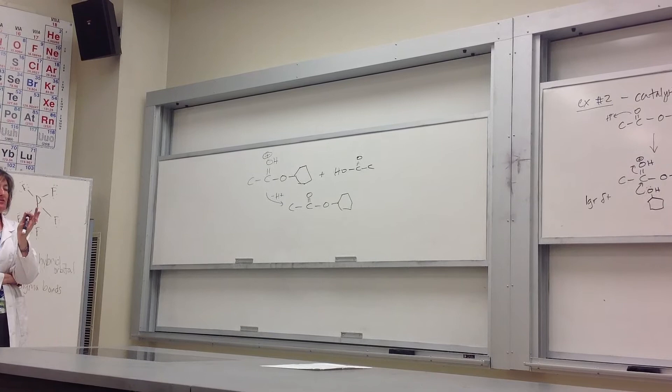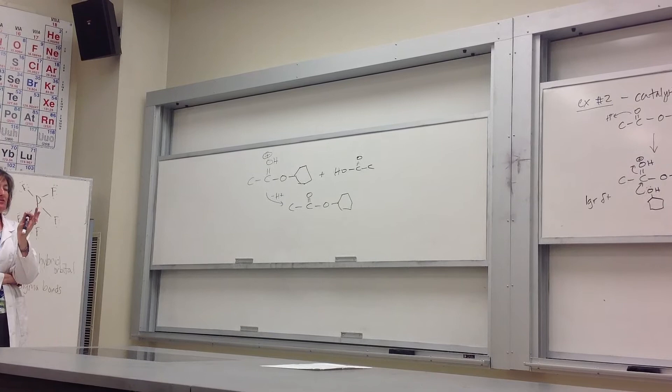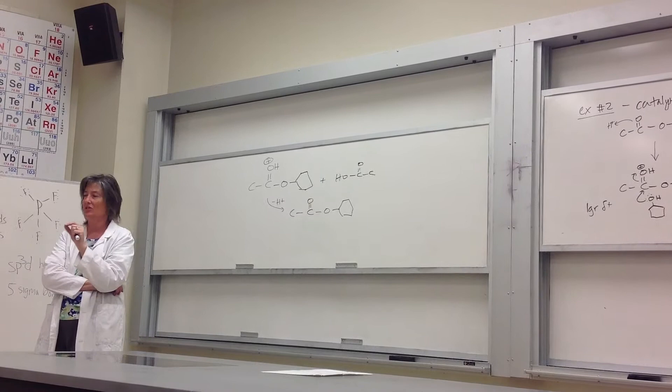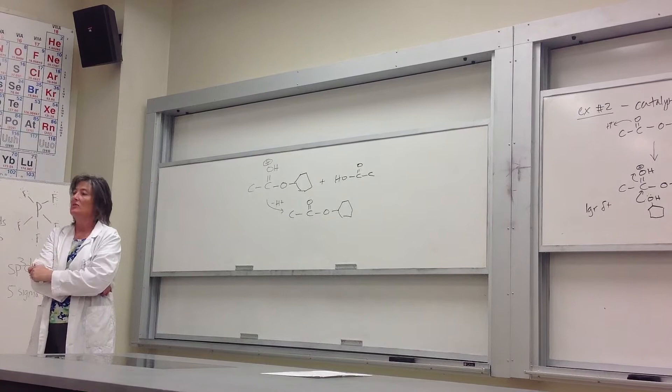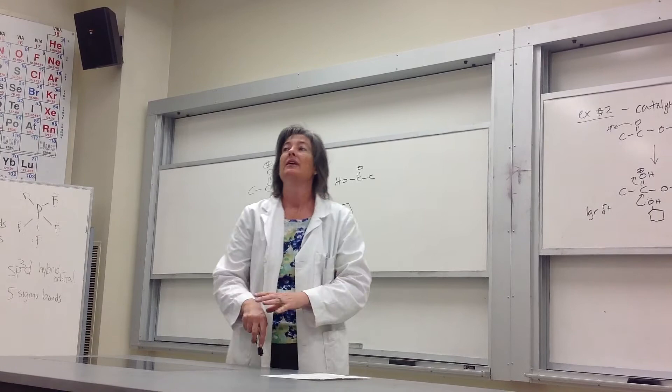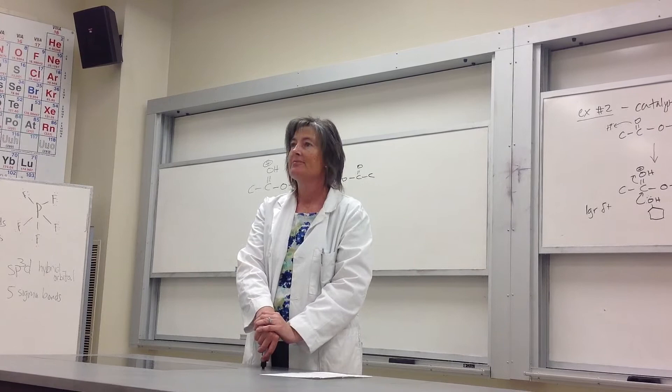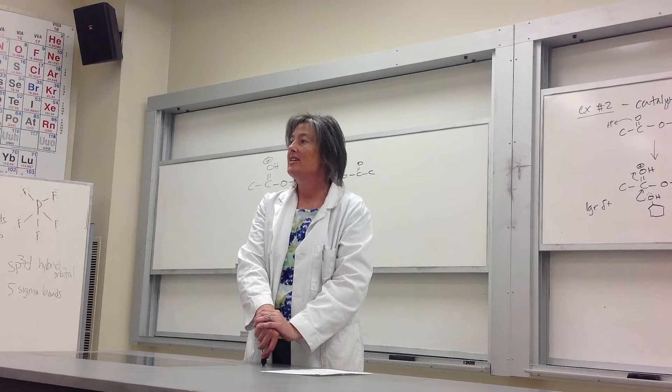When looking at anhydride reactions, the key question is whether you need a catalyst. If the nucleophile is really good, you don't need one. If the nucleophile is thin — so-so — adding a catalyst speeds things up. The products of acid chlorides and anhydrides are the same. If you're doing a reaction, an acid chloride is more reactive — faster, better yields.